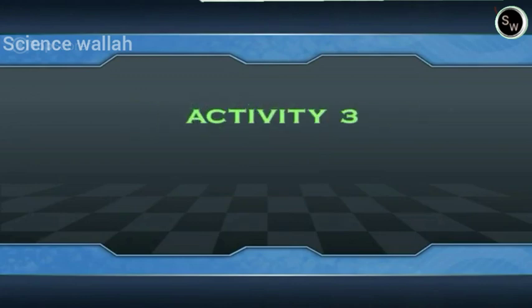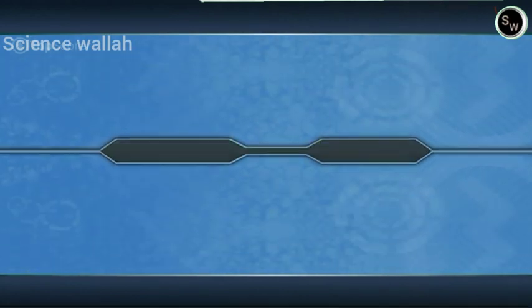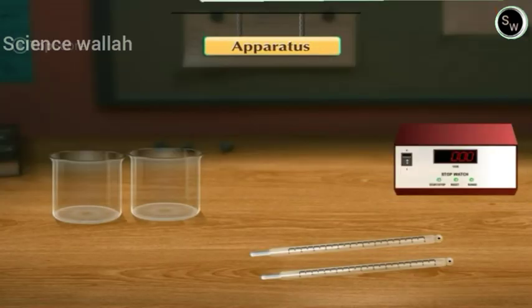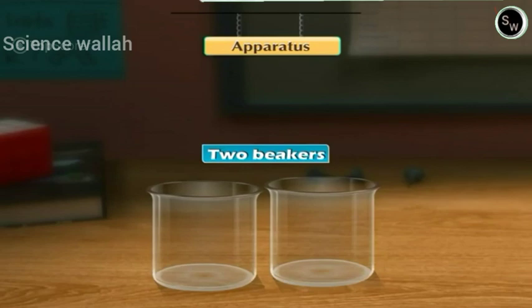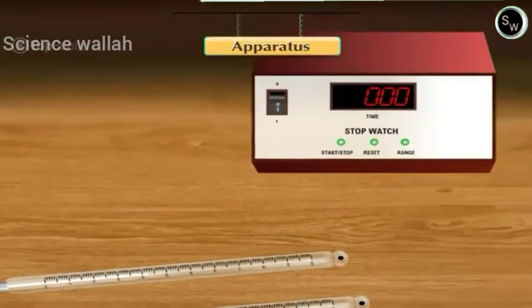Activity 3: Factors affecting the rate of loss of heat by a liquid. Aim: To study the factors affecting the rate of loss of heat of a liquid. Apparatus: We require two identical beakers A and B, two thermometers, and a stopwatch.